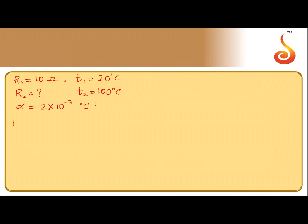We know that R2 is equal to R1 into 1 plus alpha into (T2 minus T1). This is how the resistance varies with respect to temperature.